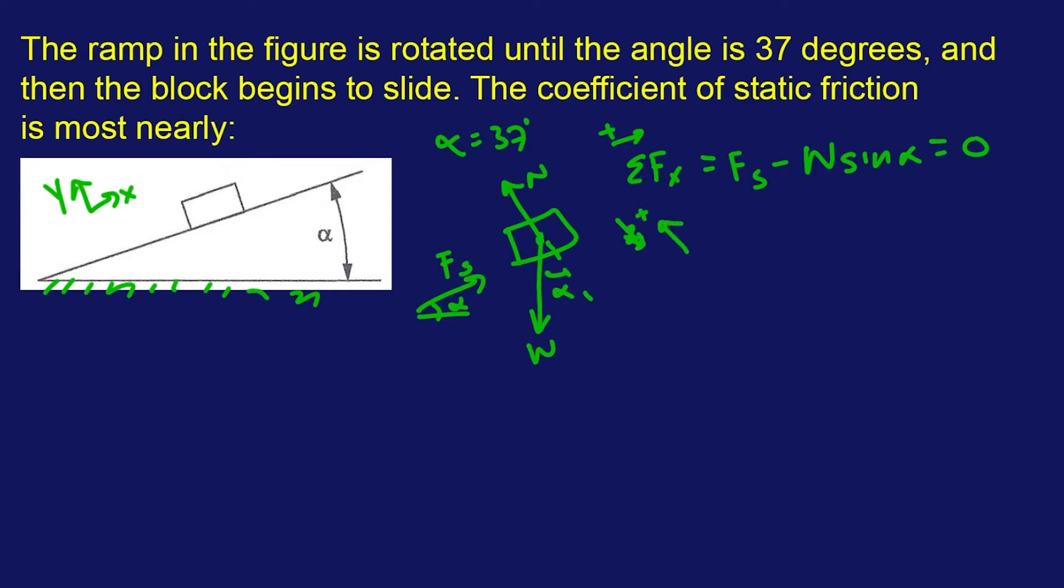But we're going to do the same thing for the y-axis. We're gonna call that direction positive, that angle, the normal direction is going to be positive. So the normal force is going to be positive, and then the weight force is going to be negative, so that's going to be W cosine alpha, and that's going to equal zero.